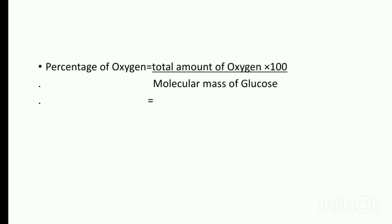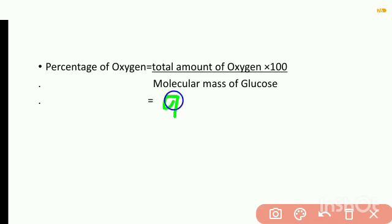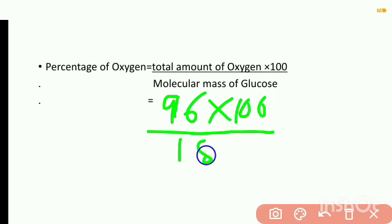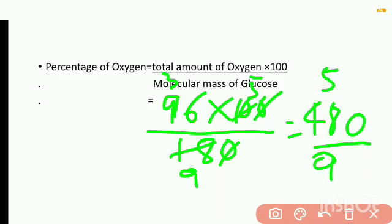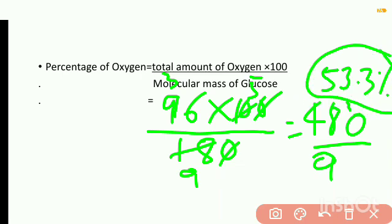Now we have to find out the percentage of oxygen. To find the percentage of oxygen: total amount of oxygen is 96, into 100, divided by molecular mass of glucose, which is 180. Simplifying: the zeros cancel, giving 960 divided by 18, which equals 53.3. Therefore, the percentage of oxygen in glucose is 53.3%.